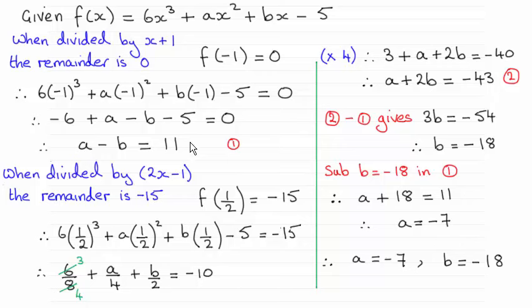So we can use simultaneous equations now between these two. I've done 2 take away 1. And you can see it gives me 3b equals minus 54, which reduces down to b equals minus 18. And then substitute b equals minus 18 back into equation 1 here. And a turns out to be minus 7.